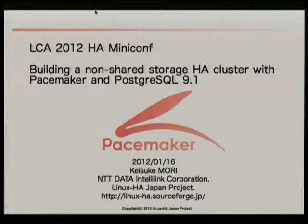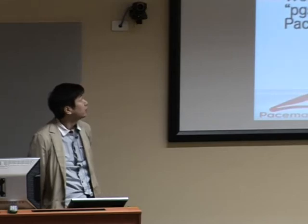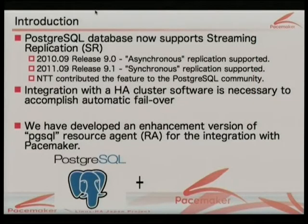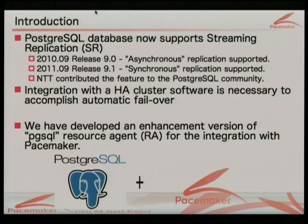My name is Keisuke Mori from NTT Japan. My company uses pacemaker and PostgreSQL for high availability clusters, and I'm also working with Andrew, a key pacemaker developer, for maintenance of the stable version of the 1.0 release series. Today's topic is about integration of pacemaker with PostgreSQL 9.1. The recent version of PostgreSQL supports streaming replication — asynchronous as of 9.0, and synchronous as of 9.1, released last September, which is very important for a high availability cluster. For a real production system, we need integration with HA cluster software such as pacemaker for automatic failover.